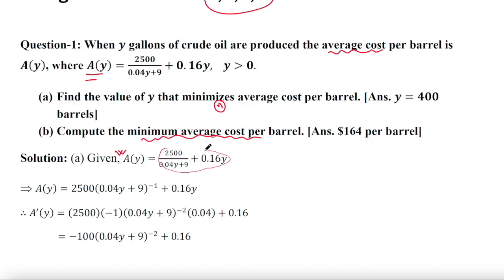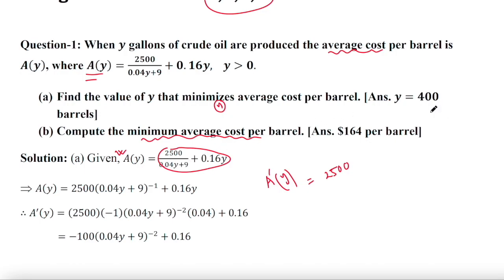If you watched my previous videos you can easily understand how to calculate the first derivative. A prime of y: 2500 is a constant, so you can put it in the numerator, and the denominator 2500, we can take the term 0.04y plus 9 to the power negative one in the numerator. The derivative of this term will be minus 1 times